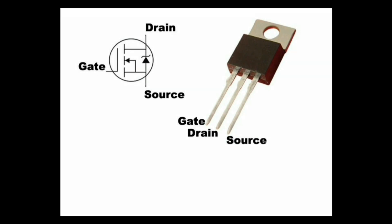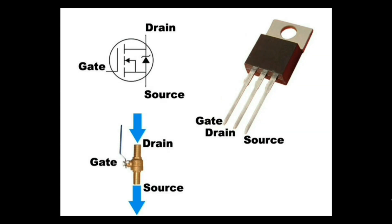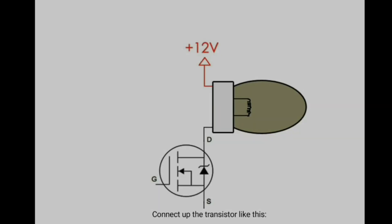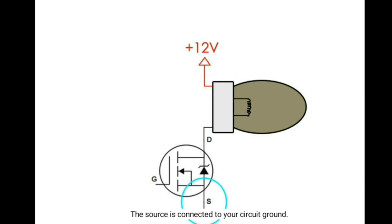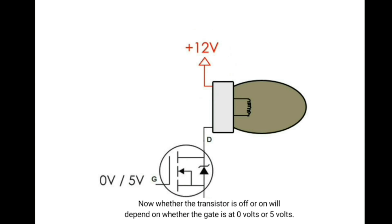Let's use an analogy to understand the function of three terminals of MOSFET. Let's compare our MOSFET to a valve of a plumbing system. Drain is the pin that current drains into. Source is the pin that current flows out of. And gate is the pin that will turn the transistor on and off, kind of like how a water gate valve will control the flow of water. Now, connect up the transistor like this. The source is connected to your circuit ground. Connect the negative side of your load to the drain of your transistor. Connect the positive side of your load to the positive terminal of your external power supply. Whether the transistor is off or on will depend on whether the gate is at 0 volts or 5 volts.